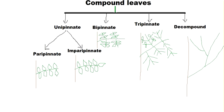Let me mention examples of each type. For paripinnate compound leaves, examples include Carica, Tamarindus (tamarind), and Cassia. For imparipinnate compound leaves, examples are Murraya, Margosa, and Rose. For bipinnate compound leaves, examples include Acacia, Mimosa (touch-me-not plant), and Albizia, which belongs to the subfamily Mimosidae.